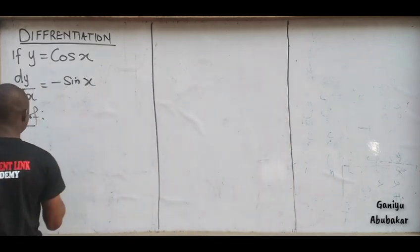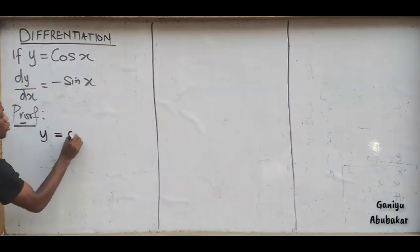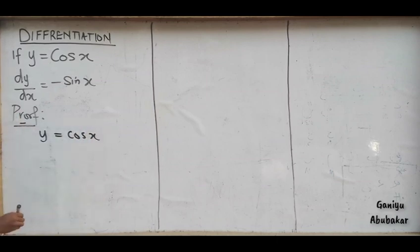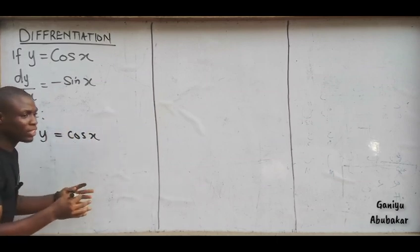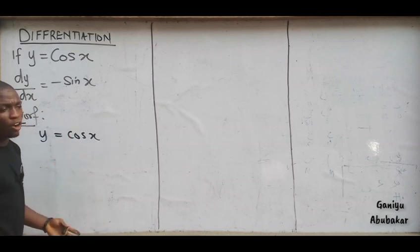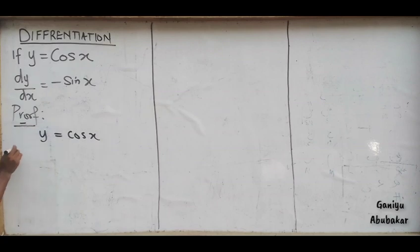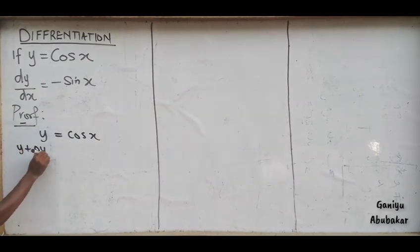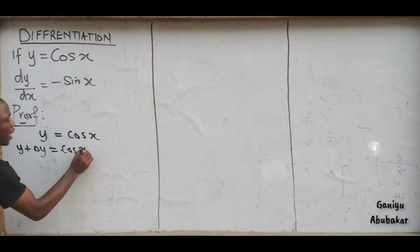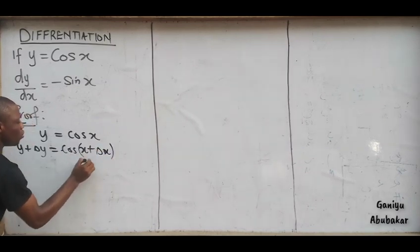As we go along, we start from the question y is equal to cos x. From our concept, we said: to y we add change in y, and to x we add change in x. That becomes: y plus Δy is equal to cos(x plus Δx).